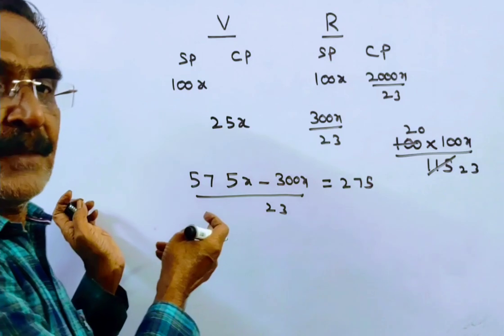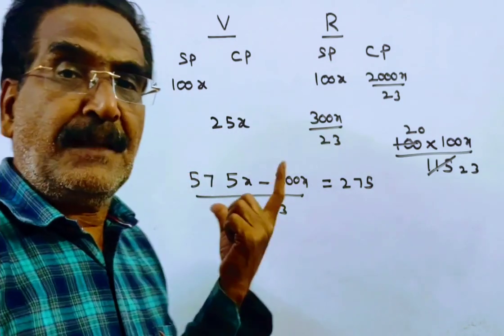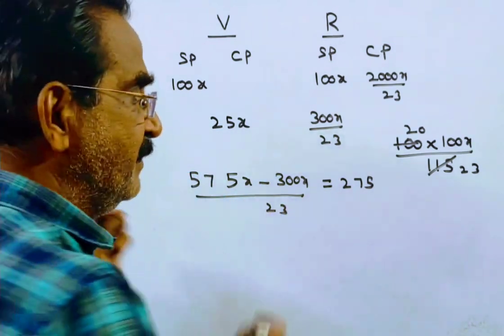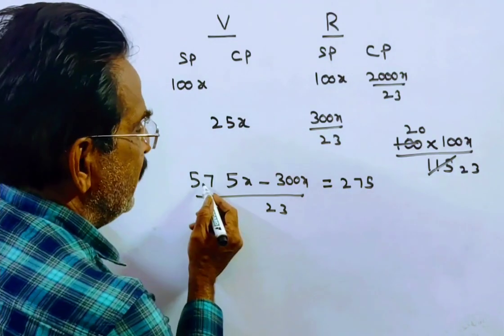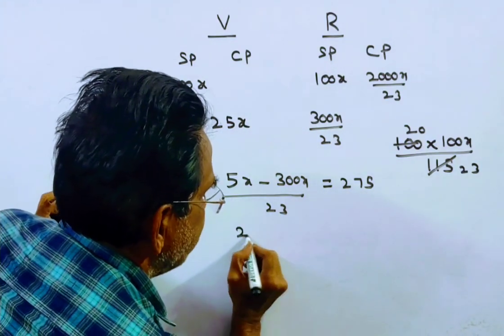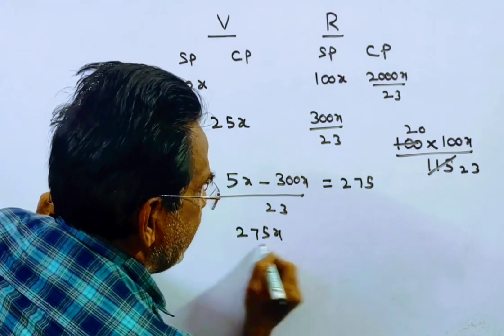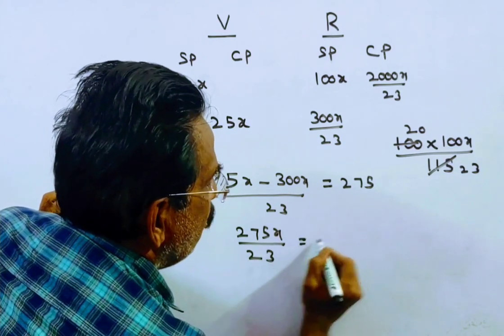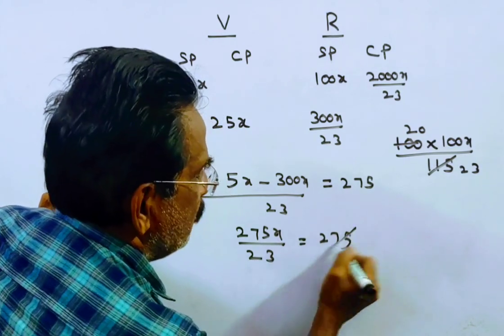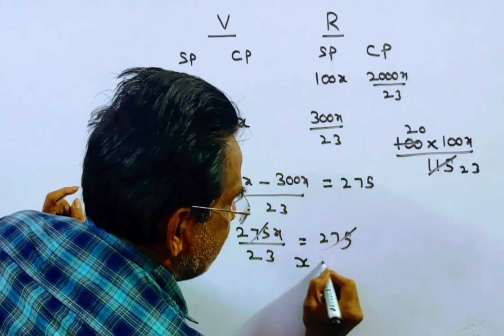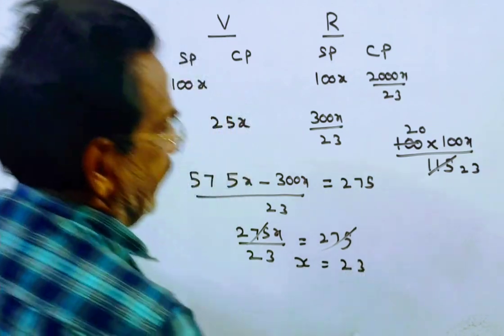This is the difference between the profits of Vinith and Roshan, which is given as 275. So 575 minus 300 gives us 275x over 23 equals 275. The 275 cancels out, so x equals 23.